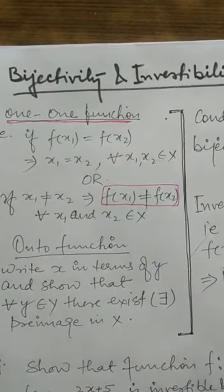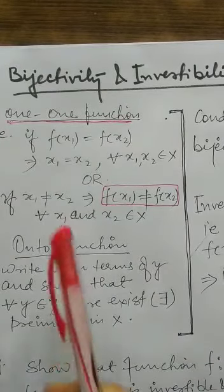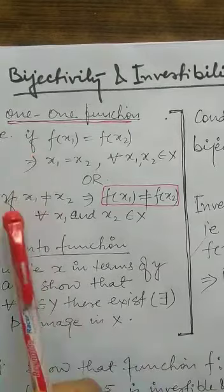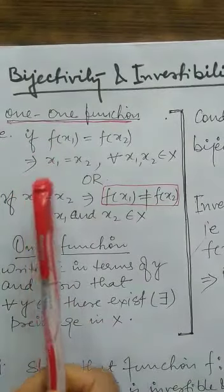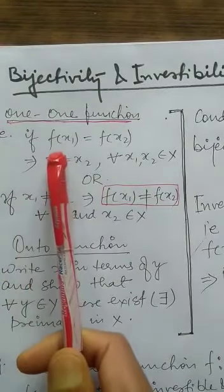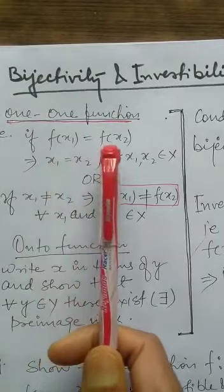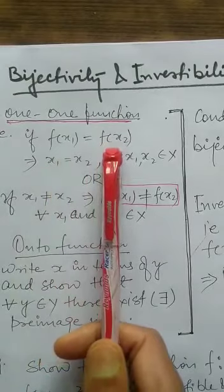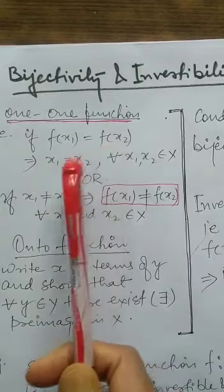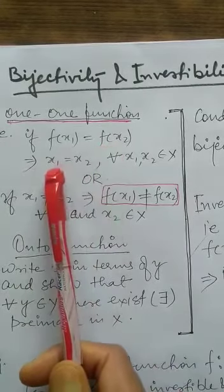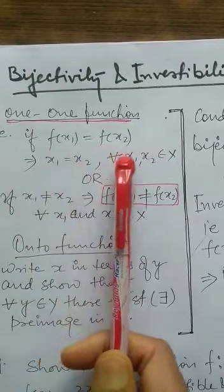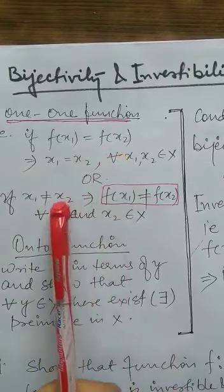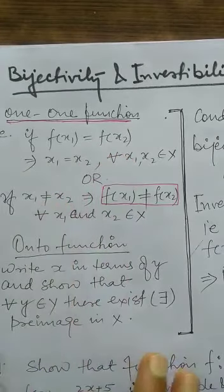Wherever we have to prove a function is one-one, we have to apply one of these two criteria: either assume f(x1) equals f(x2) and show this implies x1 equals x2, or assume x1 is not equal to x2 and show f(x1) is not equal to f(x2). Either criterion establishes the function is one-one.